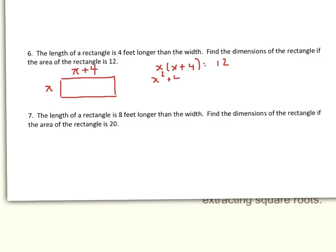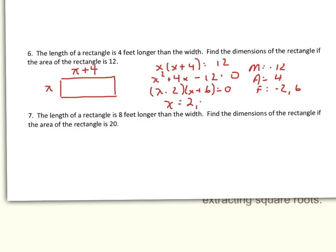I subtract 12 over right away to get x² + 4x − 12 = 0, then use MAF: what multiplies to −12 but adds to 4? Factors of −12: trying 2 and 6 — negative 2 and positive 6 add to 4 and multiply to −12. So (x − 2)(x + 6) = 0, giving x = 2 or x = −6. Negative 6 is garbage geometrically, so x = 2 — making the width 2 and the length 6. That's a 2 by 6 rectangle. You can verify: 2 × 6 = 12, and 6 is 4 more than 2.